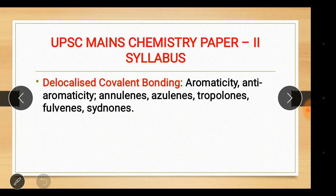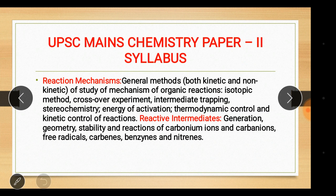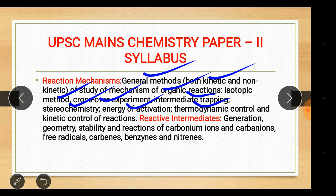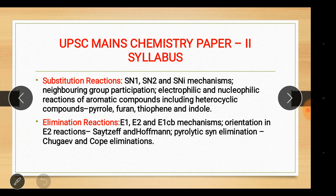Paper two: delocalized bonding and aromaticity, anti-aromaticity, annulenes, azulenes, tropolones, fulvenes, sydnones. Reaction mechanism: general methods — both kinetic and non-kinetic — for study of mechanism of organic reactions, isotopic method, crossover experiment, intermediate trapping, stereochemistry, energy of activation, thermodynamic control and kinetic control of reactions. Reactive intermediates: generation, geometry, stability and reactions of carbonium ions, carbanions, free radicals, carbenes, benzymes and nitrenes.